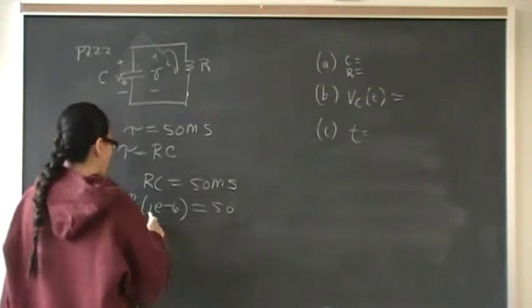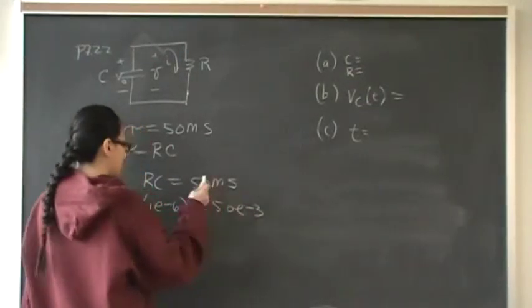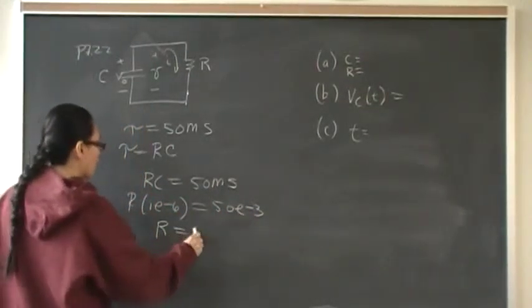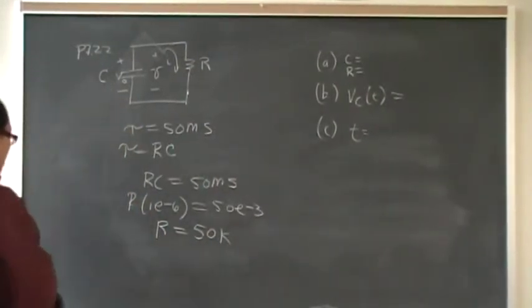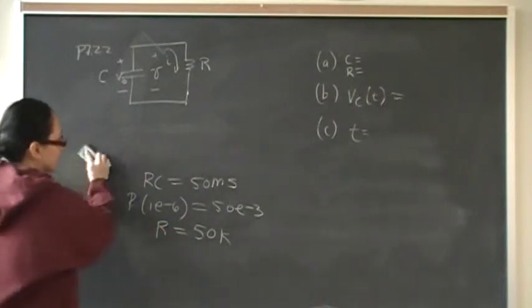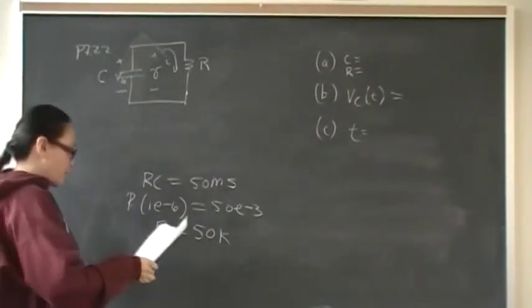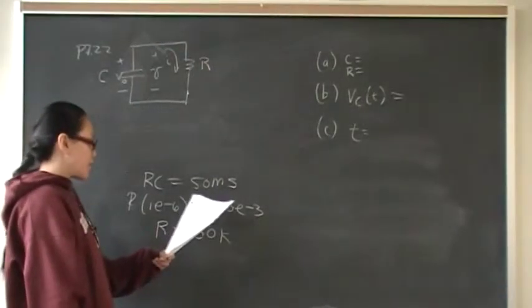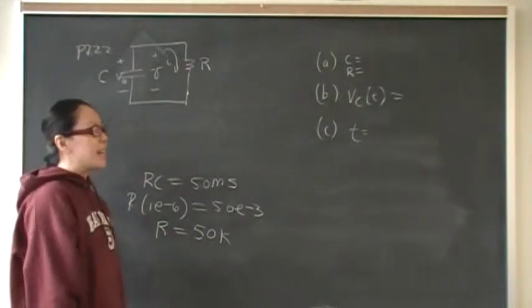I chose the value for C of 1E to the minus 6, one microfarad. So that means my R is 50E minus 3, that means 50K. So my design from my imaginary toolbox, I didn't exactly have 50K. So I came very close. I found a resistor with 2.7K and 47K and I went with it.